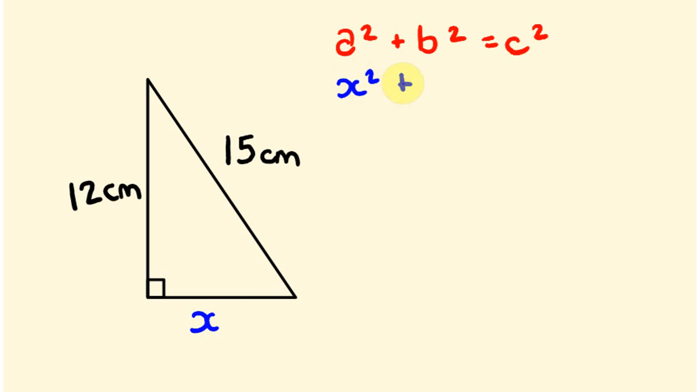...plus b². What's b²? Well, this is the shorter side here, so 12². Equals this one here squared, so 15². So let's work these out: X² plus 12 times 12 is 144. 15 times 15 is 225.